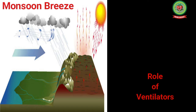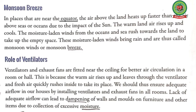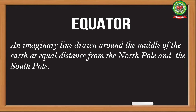Kindly open your book at page 78. Monsoon breeze: in places that are near the equator, the air above the land heats up faster than the air above the seas or oceans, due to the impact of the sun. Underline the word 'equator' and write down its meaning: an imaginary line drawn around the middle of the earth.